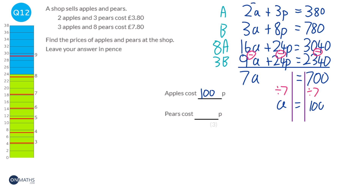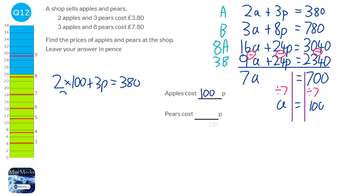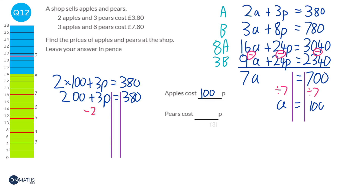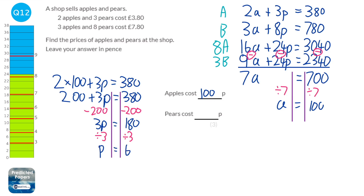We need to work out what pears cost. Picking the first equation and substituting A equals 100: 200 plus 3p equals 380. Subtracting 200 from both sides gives 3p equals 180, and dividing by 3 gives p equals 60. So a pear costs 60 pence. We can check using the other equation: 3 times 100 is 300, plus 8 times 60 is 480, totalling 780 — correct.